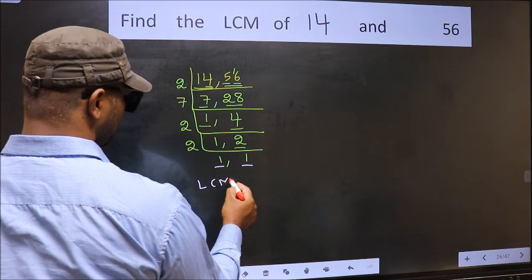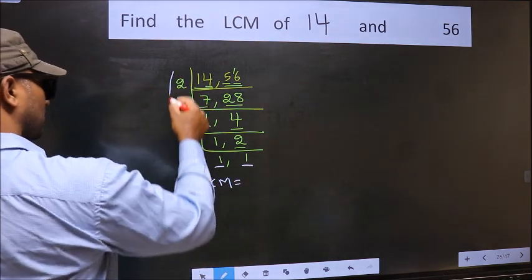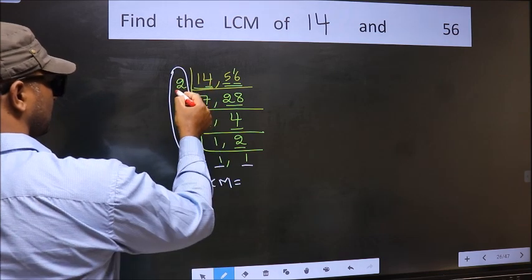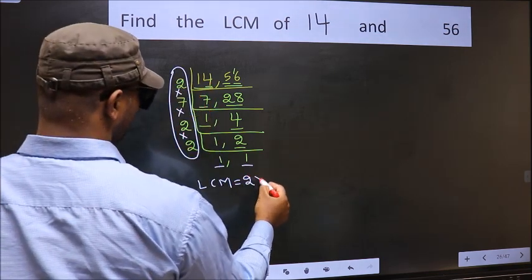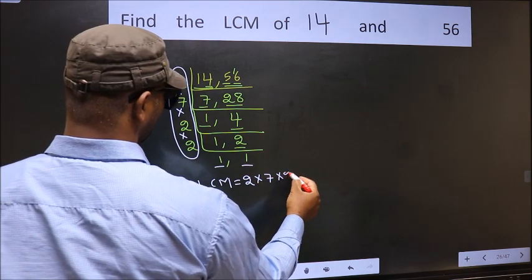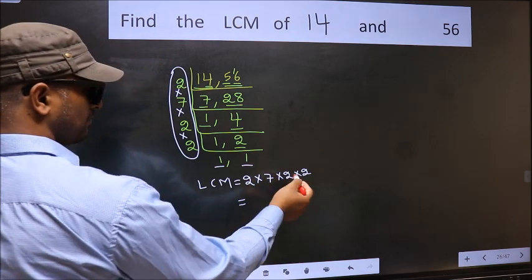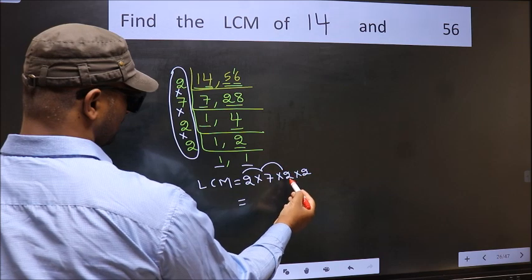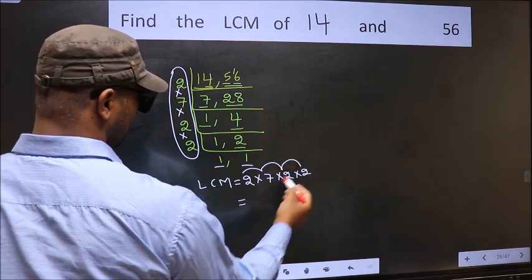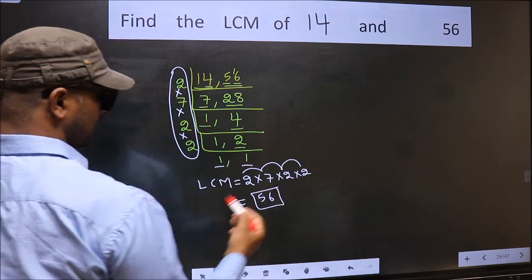So our LCM is the product of these numbers. That is 2 into 7 into 2 into 2. So let us multiply these numbers. 2 into 7 is 14, into 2 is 28, into 2 is 56. 56 is our LCM.